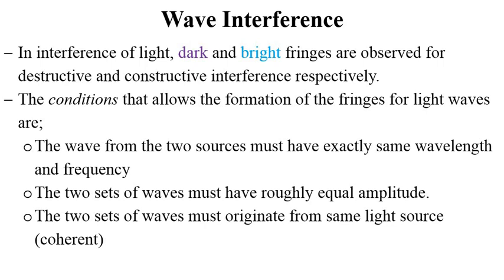For this to take place, the following conditions have to be met for the case of light. The sources must have exactly the same wavelength and frequency to get these extreme conditions or perfectly dark and perfectly bright fringes. The two sets of waves must have roughly equal amplitude. And the two sets of waves must originate from the same source, that is, they are coherent.